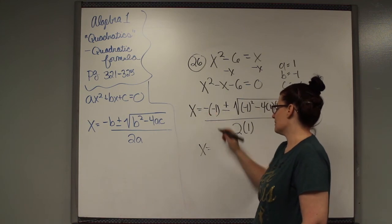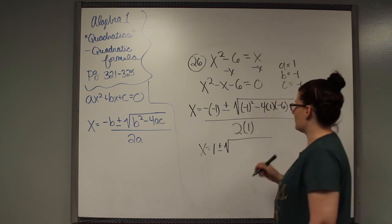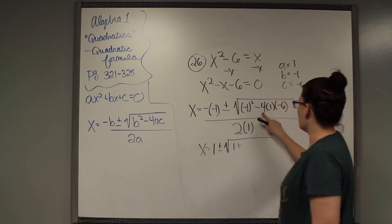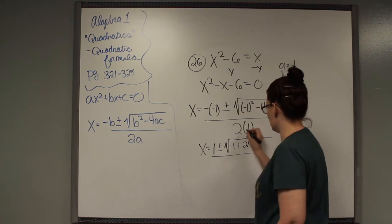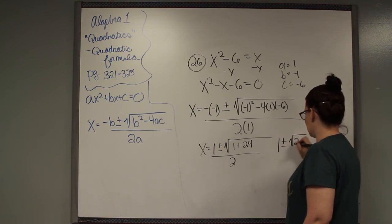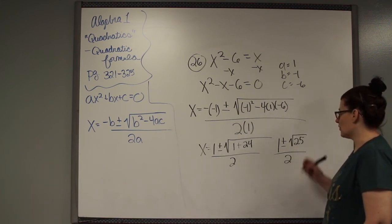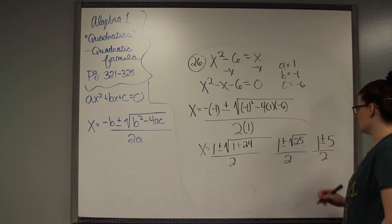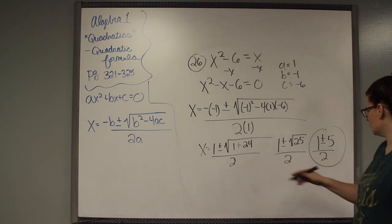Then we slowly condense that down. X equals negative times a negative. That is a positive 1. Negative times a negative makes a positive 1 there. Negative and a negative. This is going to be a positive. 4 times 1 is 4. And 4 times 6 is 24. 4 times 1 is 2. So this really will look like 1 plus or minus square root of 25, 1 plus 24, over 2. And the square root of 25 is 5. So this would be 1 plus or minus 5 over 2. So you're not done there. You have to solve 1 plus 5 divided by 2 and 1 minus 5 divided by 2.